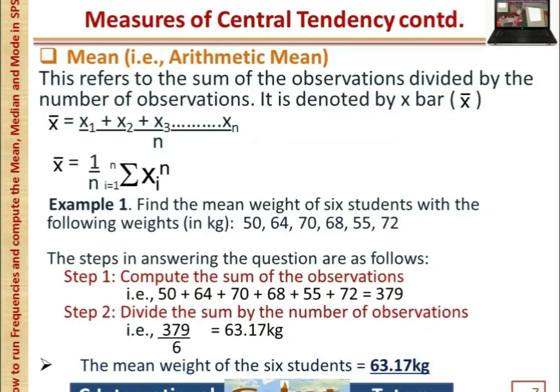Let us look at the mean, also called the arithmetic mean or average. This refers to the sum of the observations divided by the number of observations, denoted by the symbol X-bar. For example, to find the mean weight of six students, compute the sum of the observations — which gives 379 — then divide by the number of observations: 379 divided by 6, which gives 63.17 kilograms.